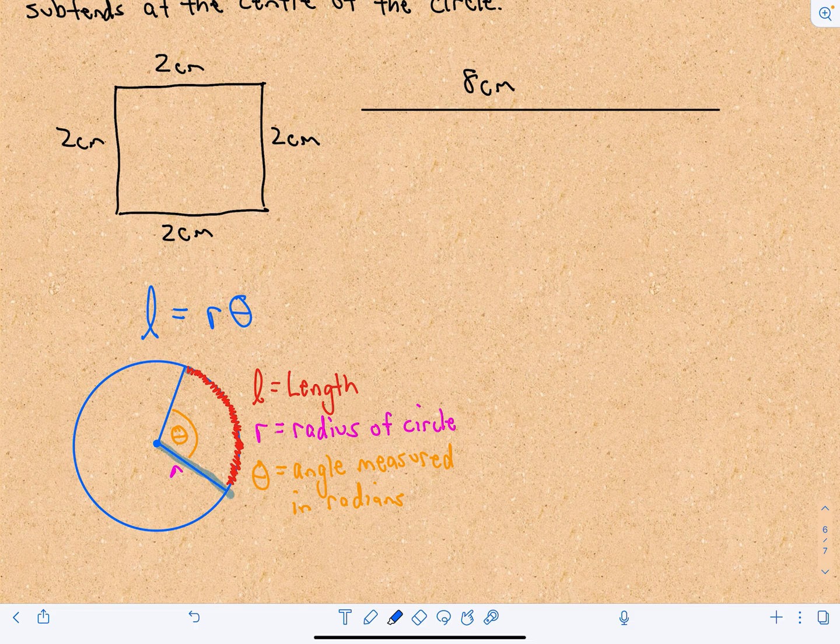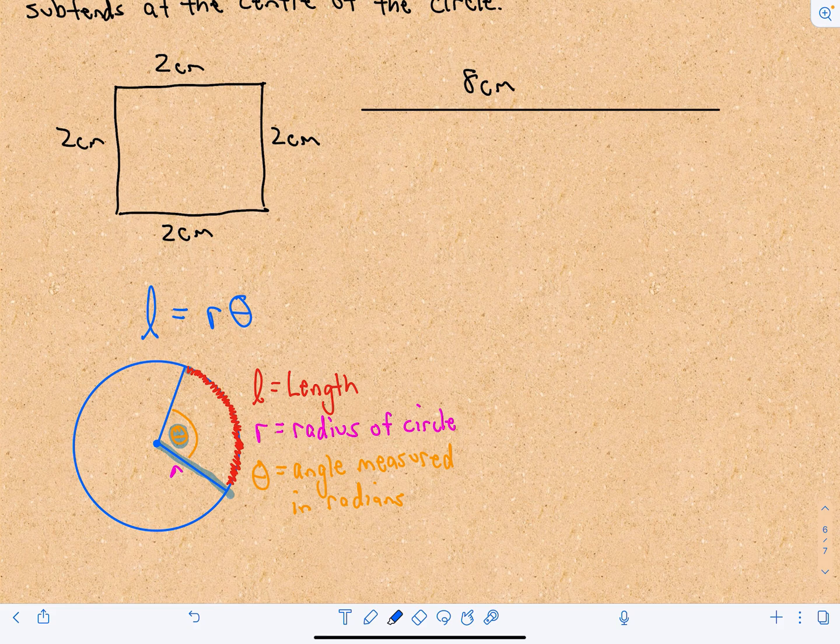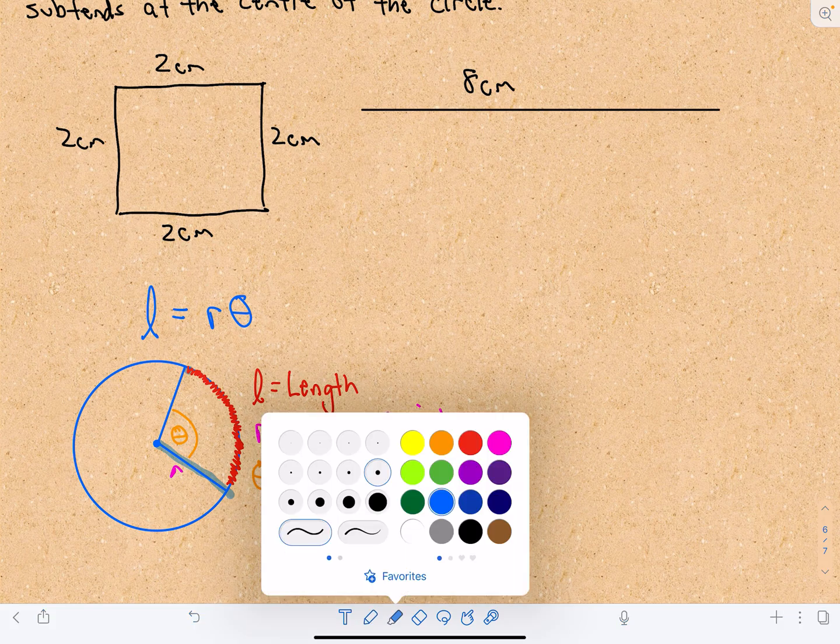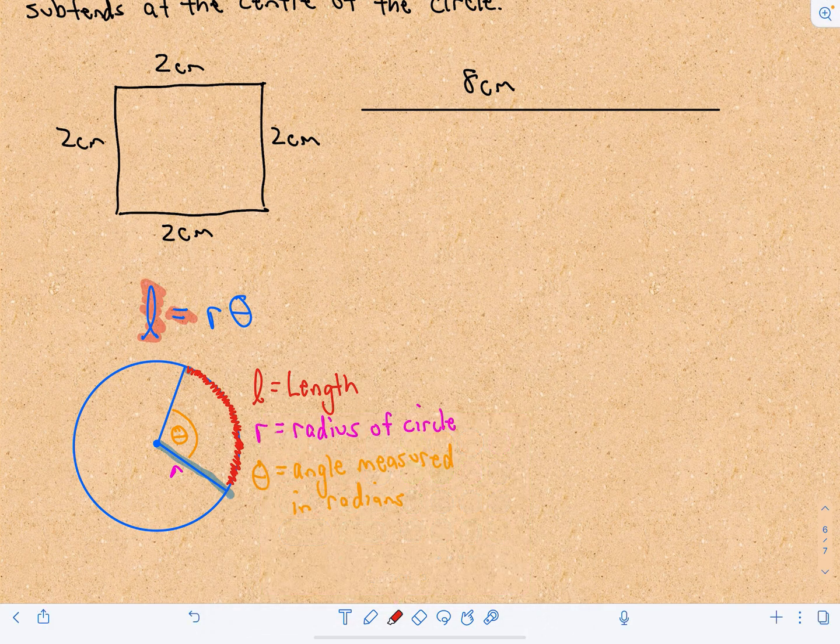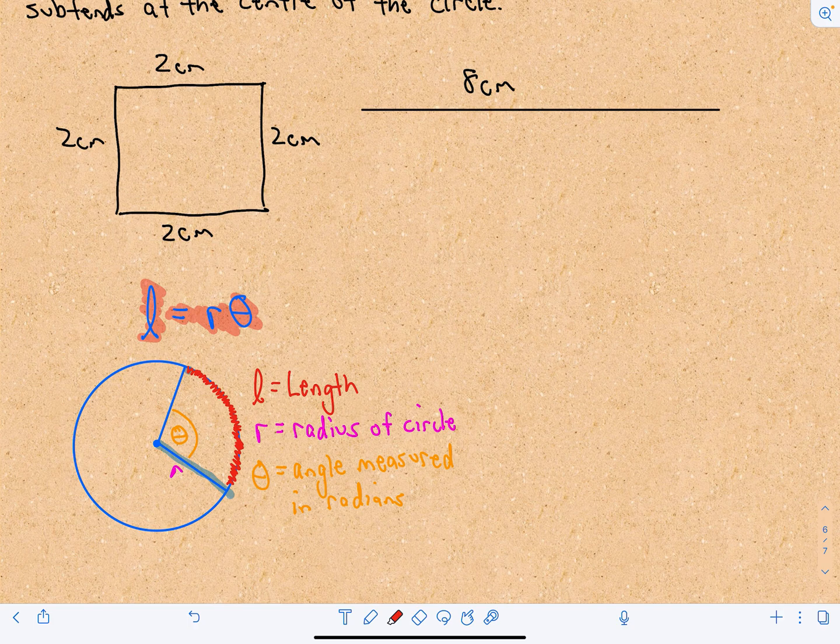then you can find the angle theta by using the formula that I have here. The length is going to equal the radius times the measure of that angle. So if you know this formula, this one should be hopefully pretty straightforward.